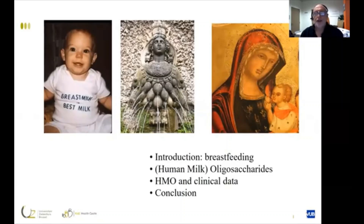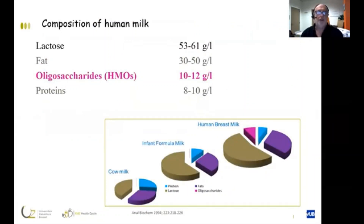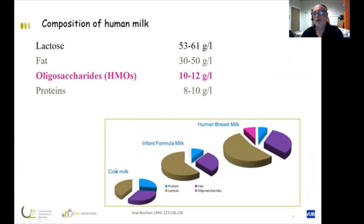Breastfeeding is the best way to feed all infants. Breast milk is the best nutrition for every infant. What is very typical for the composition of human milk is the presence of oligosaccharides, which is the third most important component after lactose and fat, but more oligosaccharides than protein. That's a huge difference between mother's milk and cow's milk or cow's milk-based infant formula, because oligosaccharides are virtually absent in cow's milk and cow's milk-based infant formula.